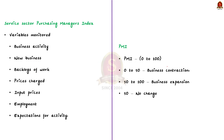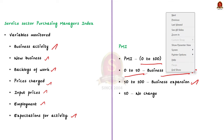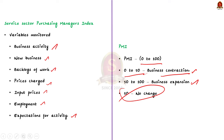For the service sector PMI, the variables monitored are business activity, new business, backlogs of work, prices charged, input prices, employment, and expectation of activity. Note that the PMI is a number from 0 to 100. A PMI above 50 represents expansion compared to the previous month; PMI under 50 represents contraction; and a PMI of 50 indicates no change. India's Manufacturing PMI for November 2023 is 56, meaning the manufacturing sector in India is currently expanding.